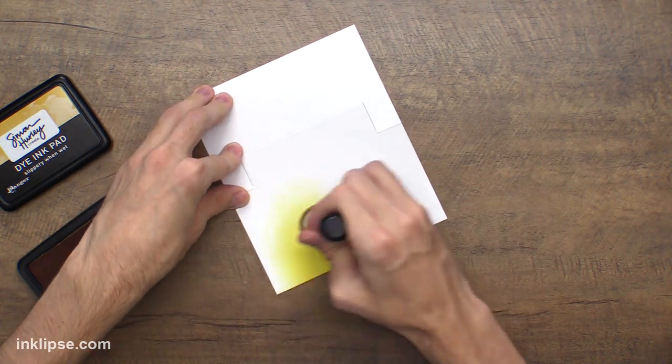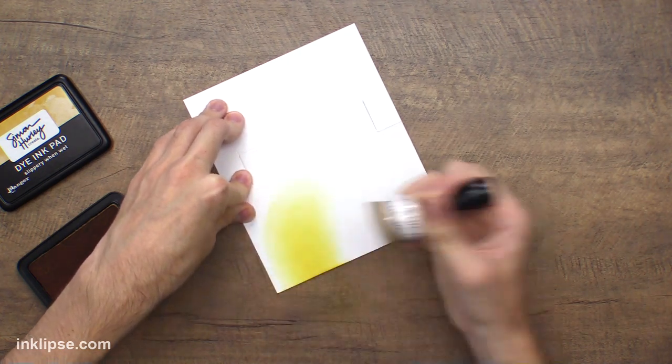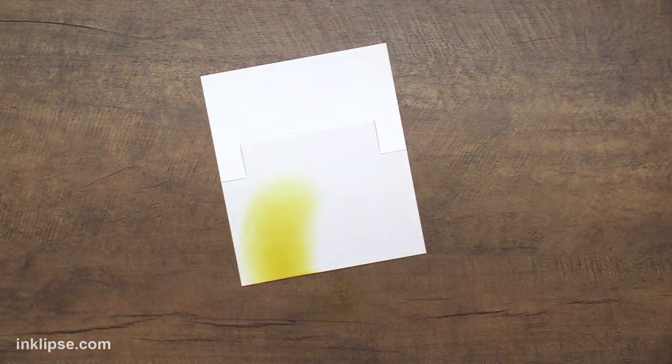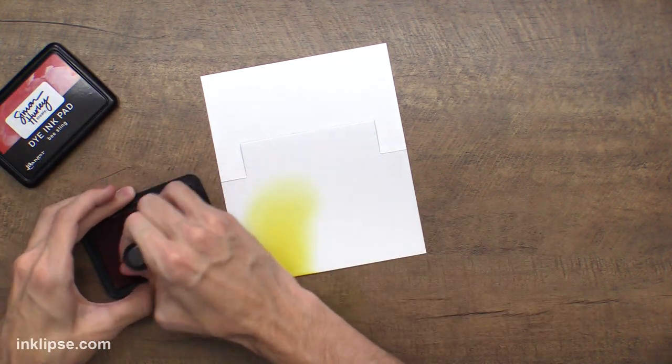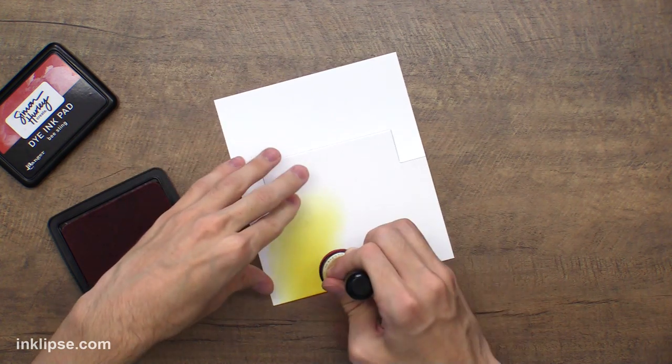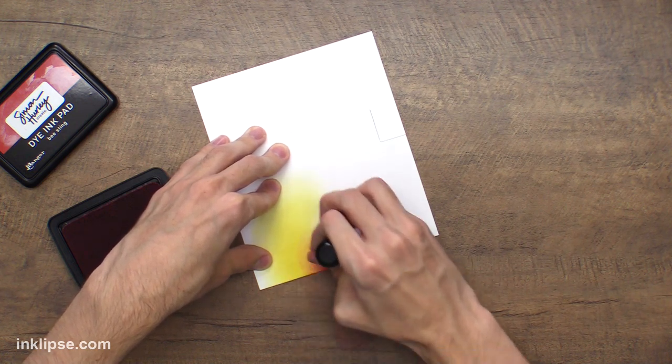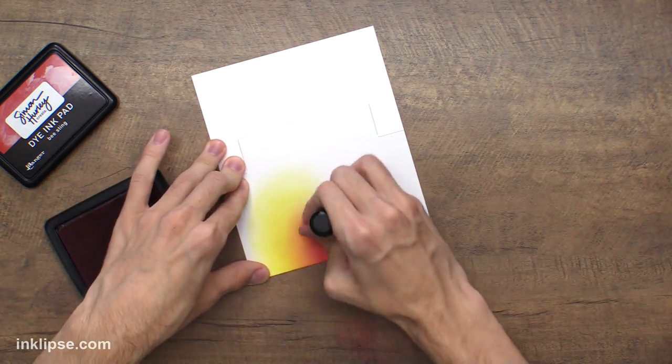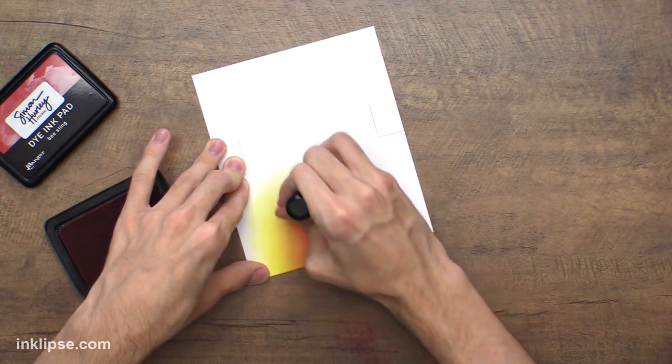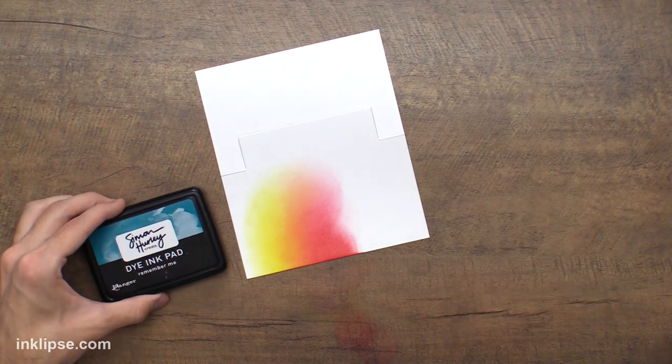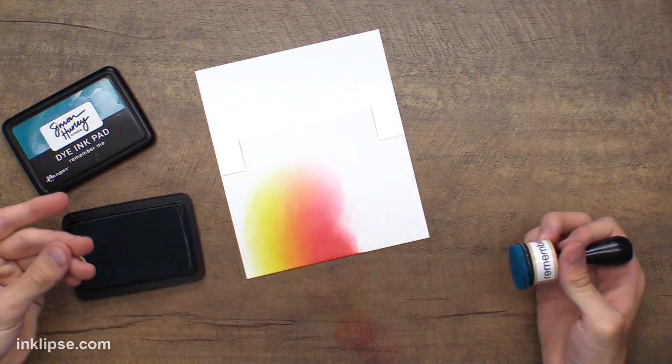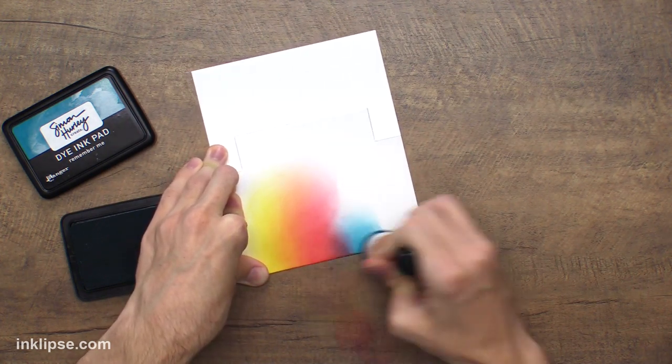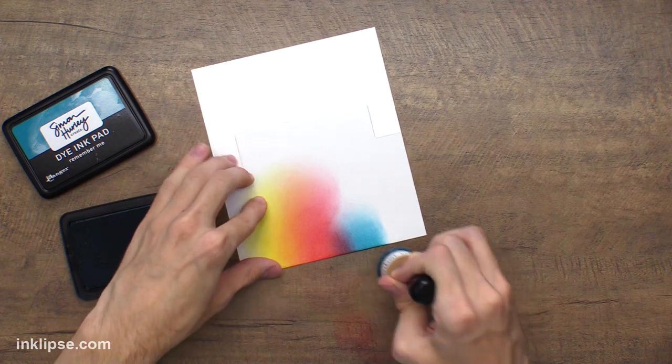It's super easy to blend with the Simon Hurley inks. You just don't even need to grab any more ink, you can just keep moving your blending tool around until that color runs out. I'll go in with a little bit of Bee Sting as well, this is red. These blend super nicely. Even if you have harsh marks at the beginning, it's super easy to blend from color to color. In between there it's going to make a new color, so you get kind of a little bit of orange which I think is so much fun.